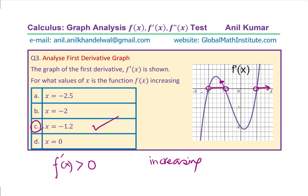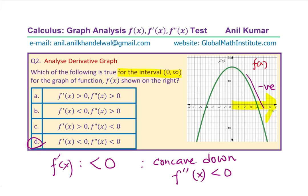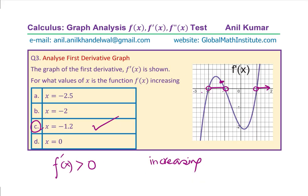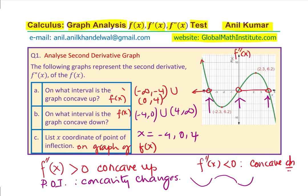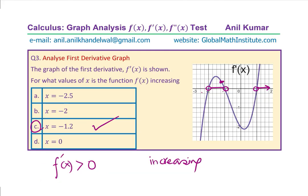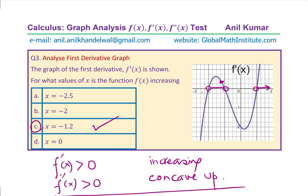These graphs can be misleading at times, but I hope this analysis makes the concept absolutely clear. To summarize: we analyzed the graph of the function, the graph of the first derivative, and the graph of the second derivative. First derivative > 0 means the function is increasing; second derivative > 0 means concave up. I hope you find it interesting and useful. Please provide your suggestions and comments. If you like and subscribe to my videos, that would be great. Thank you and all the best.